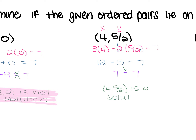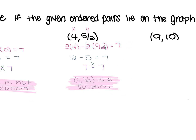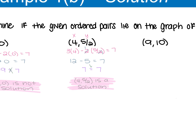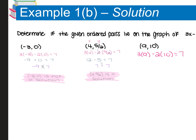For the ordered pair (9, 10), we have 3 times 9 minus 2 times 10 = 7. That gives 27 - 20 = 7, and 27 minus 20 is 7, so 7 = 7. Once again we have a true statement, so (9, 10) is a solution.